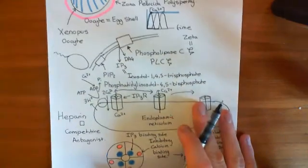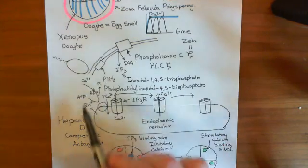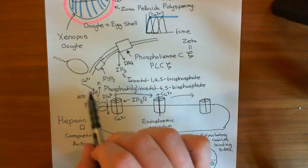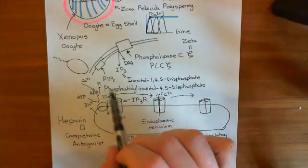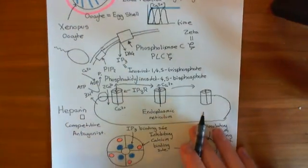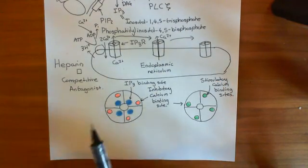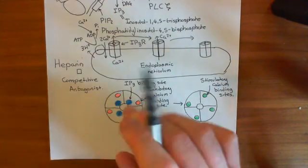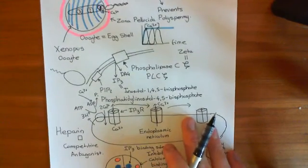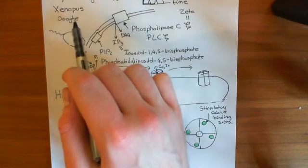When the initial calcium influx comes in from the sperm touching the oocyte membrane, it will now bind to the inhibitory calcium binding site on these IP3 receptors and inhibit them, making them less likely to open. So all of these IP3 receptors will be closed, and you won't get any release of calcium from the intracellular store. Remember, it's the release of calcium from the intracellular store that causes the rise in calcium concentration — the calcium coming in from outside is minuscule compared to the release from calcium stores. So heparin, as expected, blocks these calcium waves, at least in Xenopus oocytes.